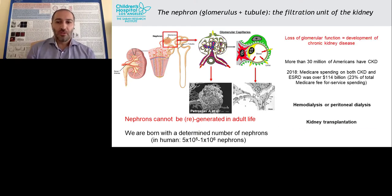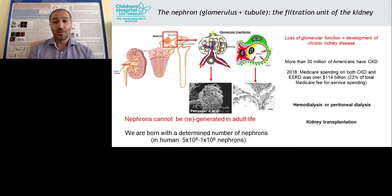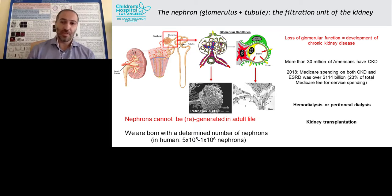Loss of glomerular function leads to the development of chronic kidney disease. In the United States alone, there are more than 30 million Americans who have a diagnosis of chronic kidney disease. This is a major burden financially on the healthcare system, and in 2018 alone the estimated cost for CKD treatment and end-stage renal disease treatment was somewhere around $114 billion. The only treatments currently available for patients with renal failure are either dialysis or kidney transplantation.